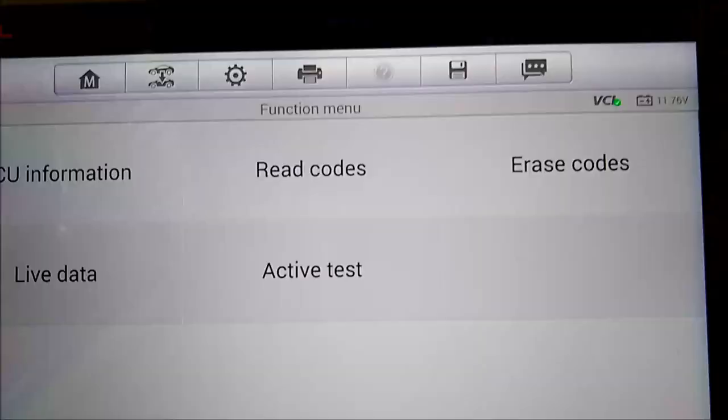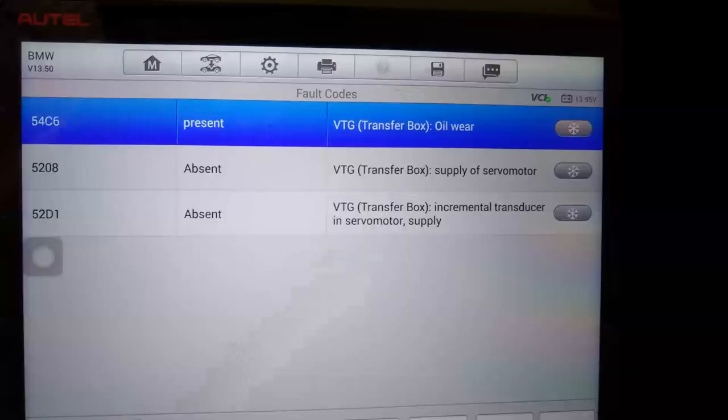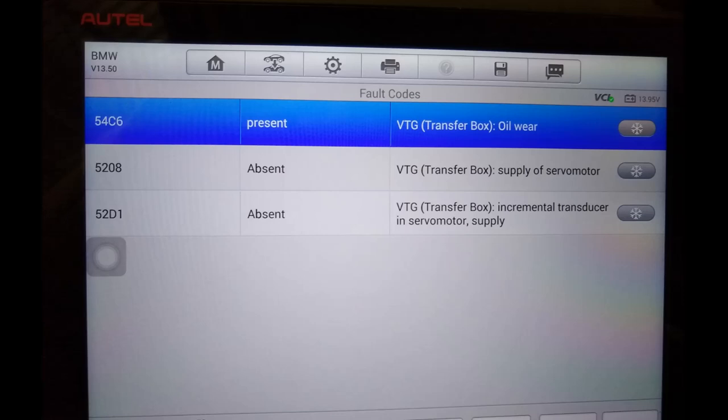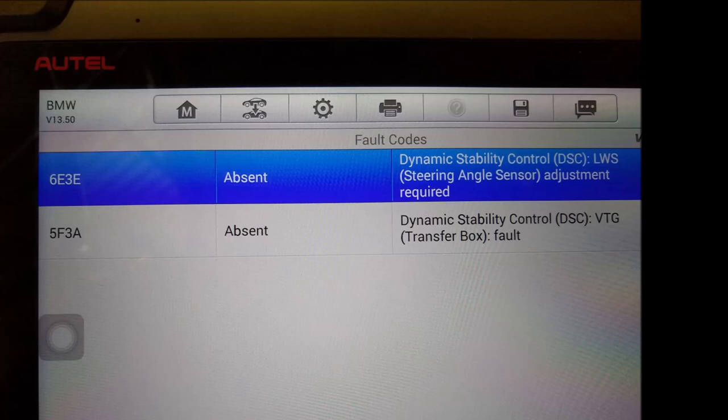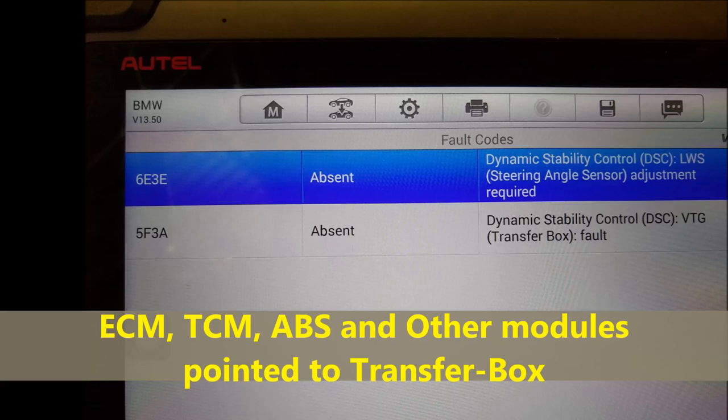Now, we start by pulling out the codes and immediately we can see that it's a code 5F3A. If you look at it, the description is the Dynamic Stability Control for the transfer case or transfer box as they call it. Now, it's important to understand that this code appears in all the other modules as well, so the ECM has a code pointing to the transfer case, the transmission computer also has a code pointing to the transfer case, so this code pretty much spreads out and it propagates to the other codes.